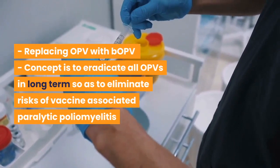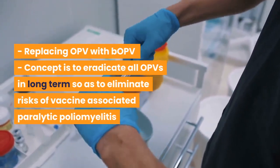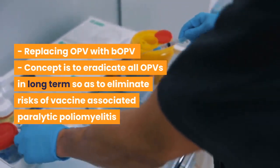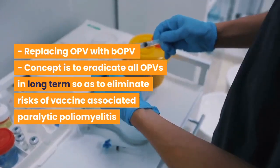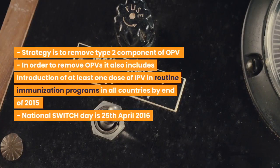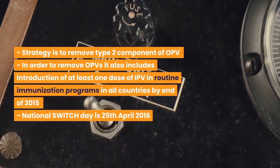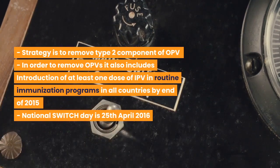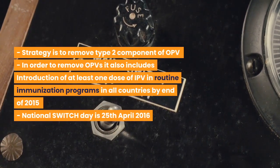The switch from OPV to bOPV: the concept is to eradicate all OPVs in the long term so as to eliminate risks of vaccine-associated paralytic poliomyelitis. The strategy is to remove the type 2 component of OPV. It also includes introduction of at least one dose of IPV in routine immunization programs in all countries by end of 2015. National Switch Day was the 25th of April 2016.